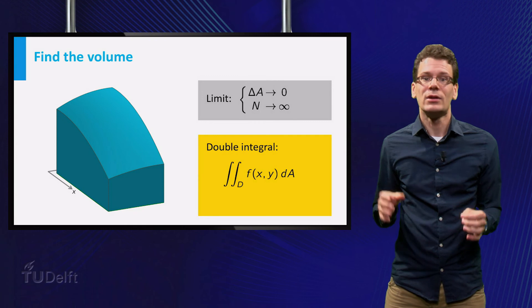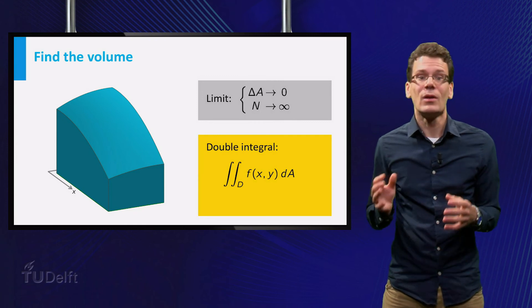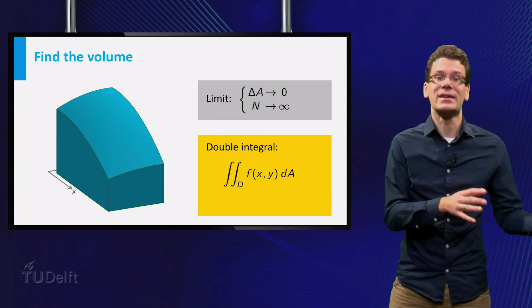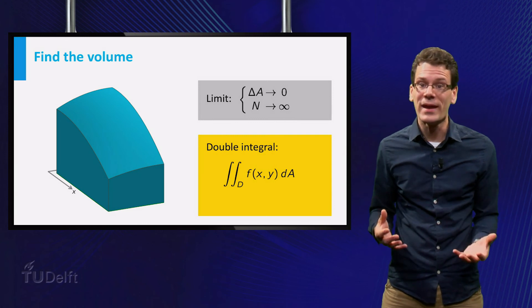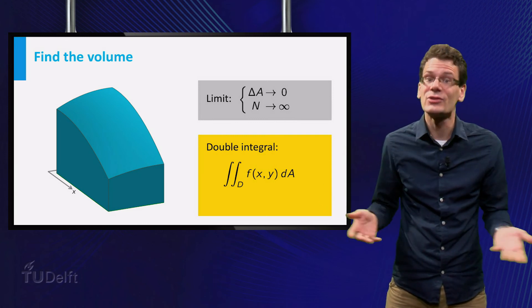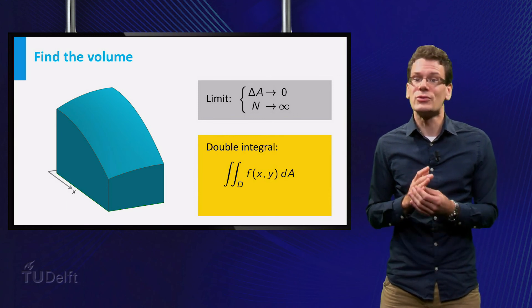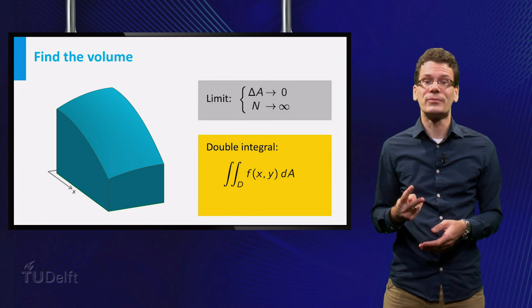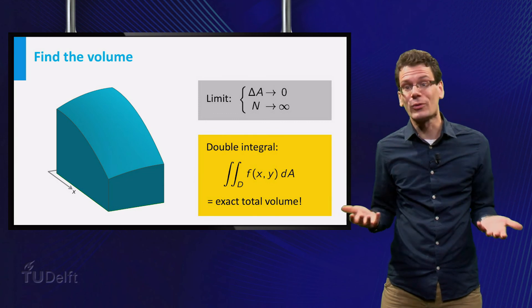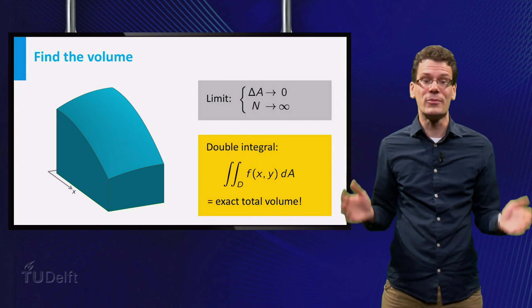We denote this as follows: the double integral over d of f, where d is the domain over which we integrate, in this case the base of the building. We use two integral signs to stress that there are two variables involved. In this case this integral represents the exact volume of the building.